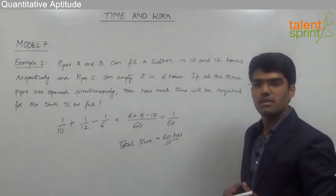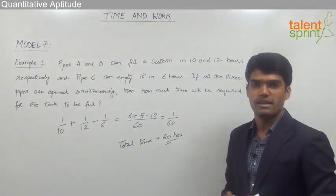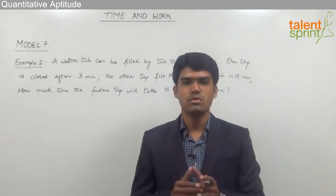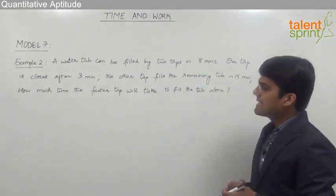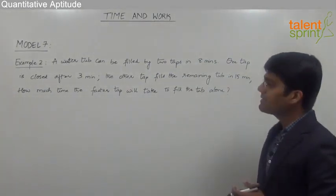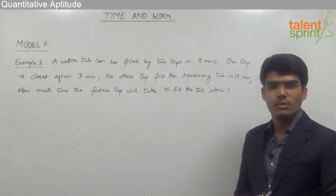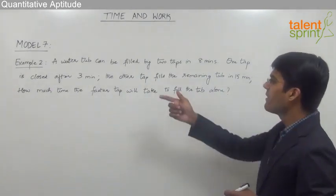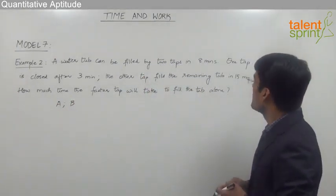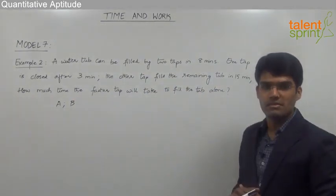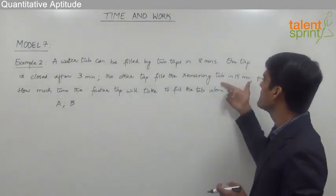As observed, this is quite similar to time and work — the only difference is that instead of persons we have pipes filling or emptying the tank. Let us take another example using the concept of work = pipes × time. A water tub can be filled by two taps in 8 minutes. One tap is closed after 3 minutes, and the other tap fills the remaining tub in 15 minutes. How much time will the faster tap take to fill the tub alone?